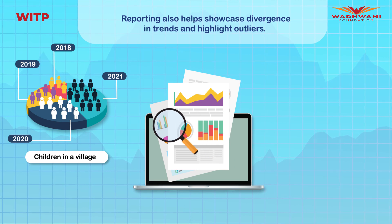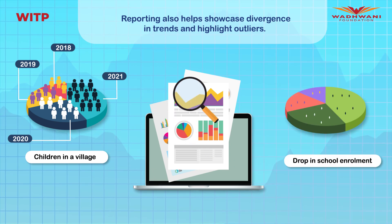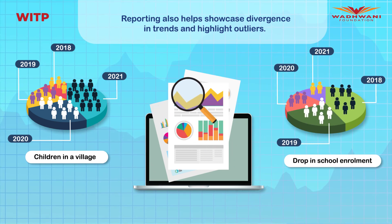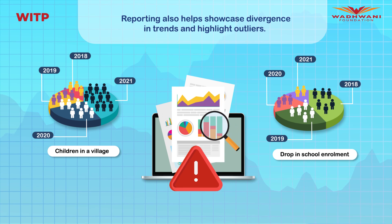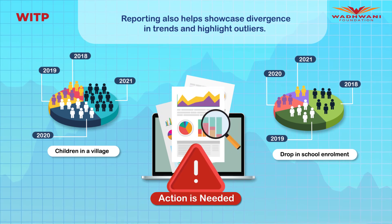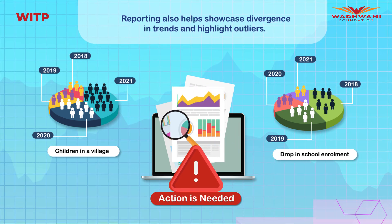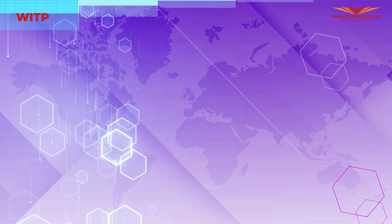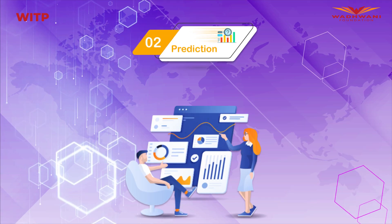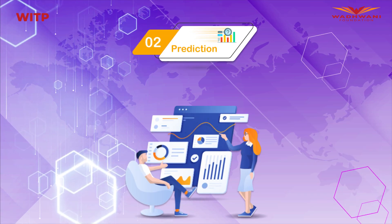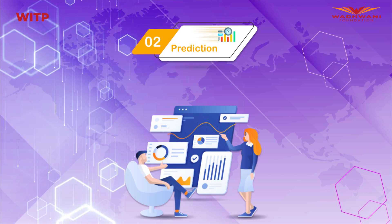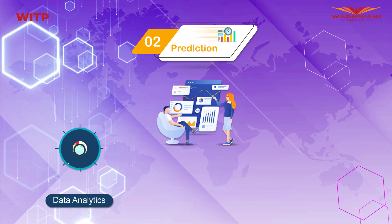For example, if we see growth in the number of children in a village but a drop in school enrollment, that should trigger an alert that action is needed. So let's talk about data prediction. Prediction models predict values for the future and help with forecasting.